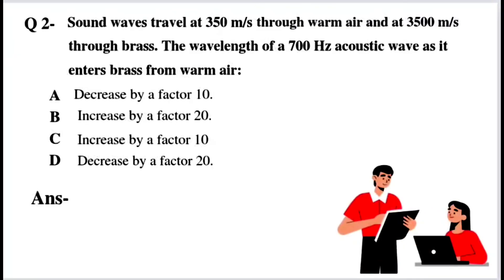Question number 2: Sound waves travel at 350 meters per second through warm air and at 3,500 meters per second through brass. The wavelength of a 700 Hz acoustic wave as it enters brass from warm air: Option A: decreases by a factor of 10. Option B: increases by a factor of 20. Option C: increases by a factor of 10. Option D: decreases by a factor of 20.